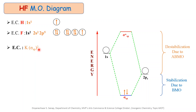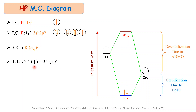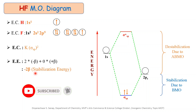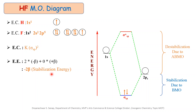The electronic configuration for the HF molecule is K sigma-sp raised to 2. The K is because there is one orbital, that is 1s2 in the fluorine atom, which is not participating in the bonding. That is why we write K here. After that, sigma-sp-2, because there are two electrons in the sigma-sp bonding molecular orbital. The energy involved during the formation of the HF molecule is calculated using the formula: number of electrons in the bonding molecular orbital multiplied by minus beta, plus the number of electrons in the antibonding molecular orbital multiplied by plus beta. Substituting the values, we get 2 × (−β) + 0 × (+β), giving a stabilization energy of −2β. This means there is liberation of energy during the formation of the HF molecule.